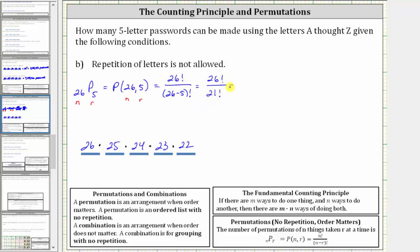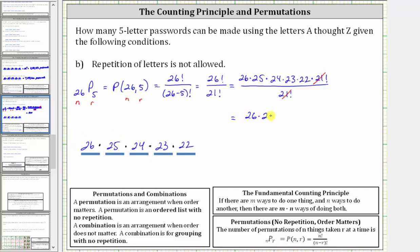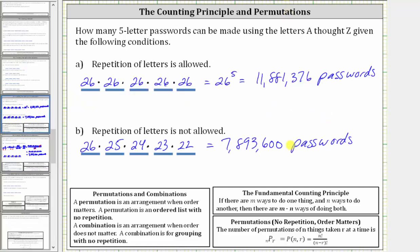Let's evaluate this by expanding 26 factorial. 26 factorial equals 26 times 25 times 24 times 23 times 22, and the remaining factors would be 21 factorial. We stop here because we have 21 factorial in the denominator, and 21 factorial divided by 21 factorial simplifies to one. After simplifying, we have the same factors: 26 times 25 times 24 times 23 times 22, which equals 7,893,600 — the same answer found previously.